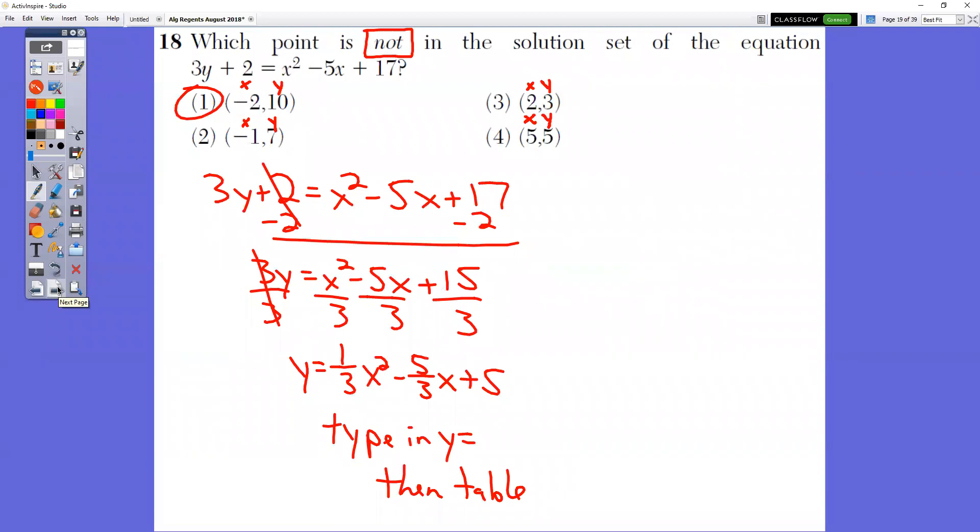In question number 18, which point is not in the solution set? So when we go, when we look at this equation, you see that two things are equal to each other. We're just going to solve it and get it in terms of y. So we want to get this y equals all by itself.